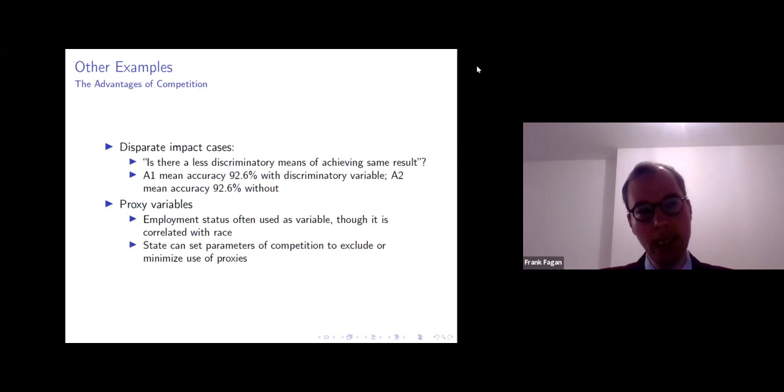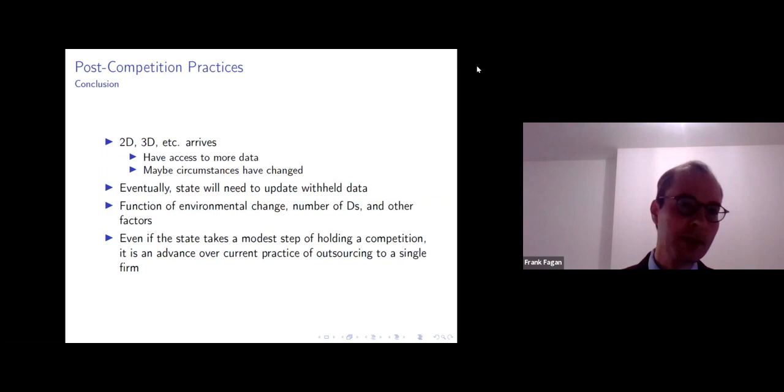So let me close out with perhaps the area that we're sort of beginning to turn our attention now, is what to do after the competition. Because once you have a competition and you have a winning algorithm, perhaps from the second defendant, then there's another defendant that arrives, the third defendant and the fourth defendant arrives, who's going to compete against that previously successful algorithm, that winning algorithm. And they presumably would have more access to data. And over time, of course, the circumstances will have changed. So eventually, the state will need to update the data that's withheld in the lockbox.